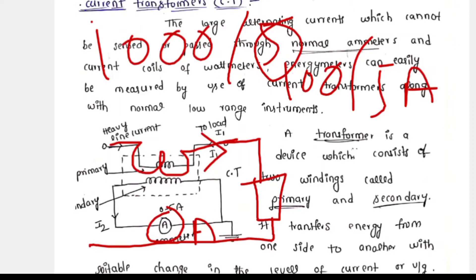Remember that in a current transformer the standard secondary current must be 5 amps; the primary current may vary. Up to 5 amps, an ammeter can be used simply — the construction of a 5-amp meter is also very simple, and insulation is easily provided. If the current is 1 kiloamp or 2000 amps, we can't construct an ammeter for 1000 amps because it requires more insulation. Hence we go for a CT.